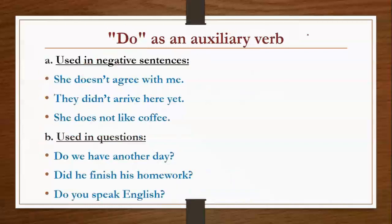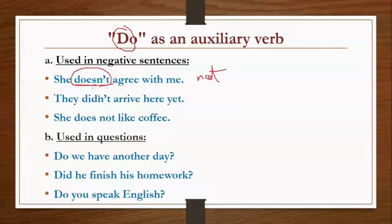'Do' as an auxiliary verb. Under 'do' come: don't, doesn't, didn't, does, did — all are parts of 'do'. First, 'do' is used in negative sentences — sentences where we use the word 'not'. For example: 'She does not agree with me.' Here you see 'doesn't', whose full form is 'does not'. Similarly, 'didn't' is the short form of 'did not'. You can write the full form or use the short form.